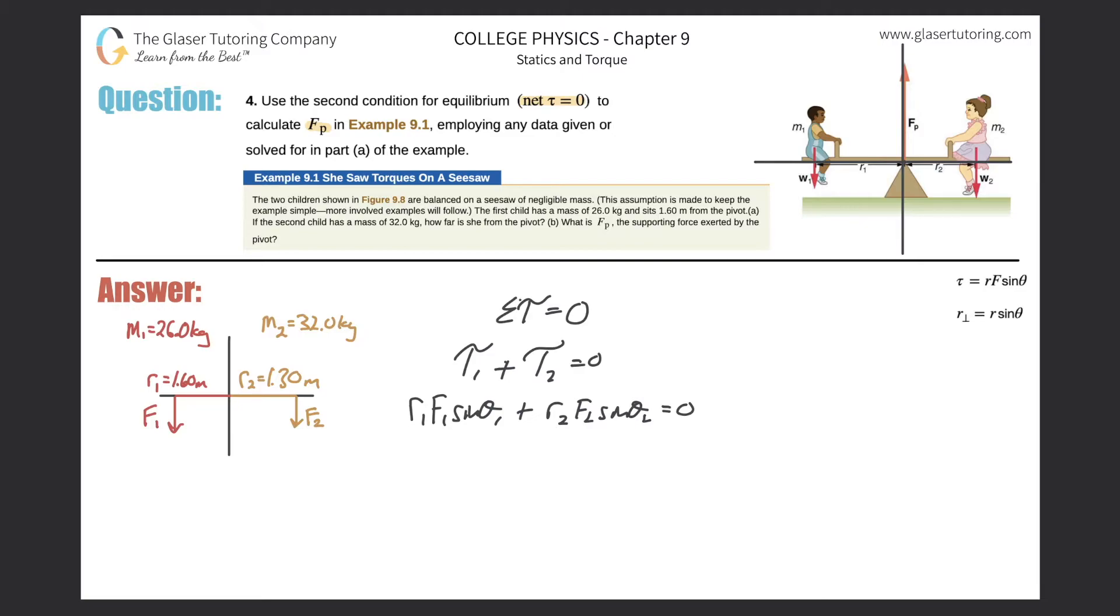Simplifying this, if you notice the forces here in relation to the lever arms in the picture, they're both 90 degrees. So therefore, sine of 90 will be one. So we can just drop that out. So this would be R one F sub one plus R two F sub two equals zero.